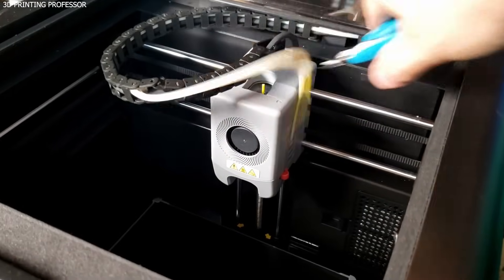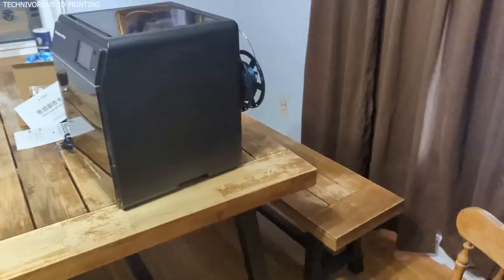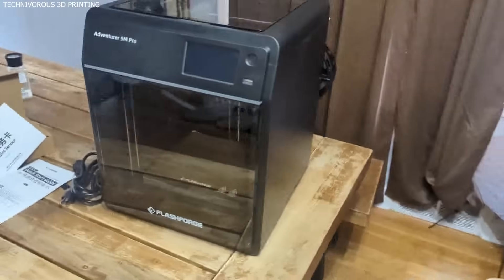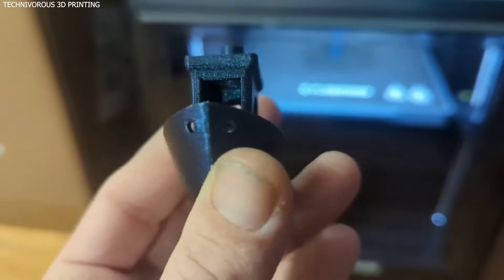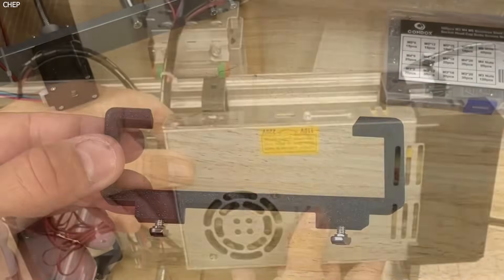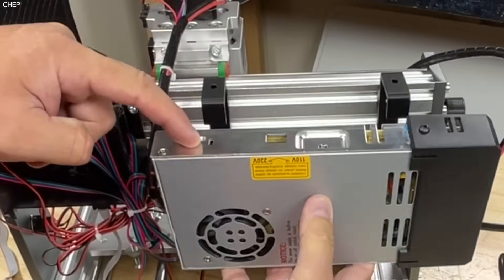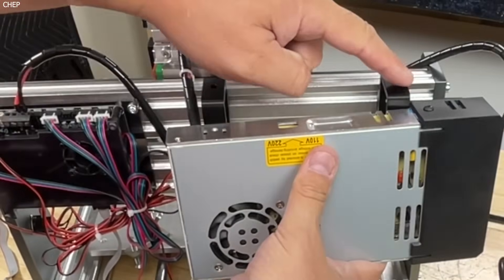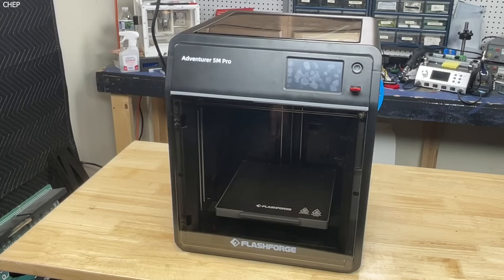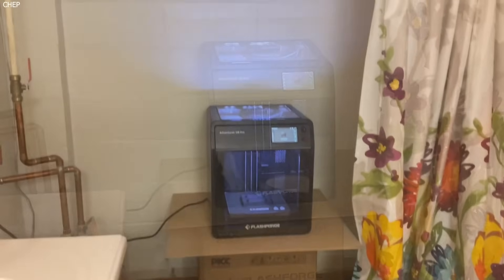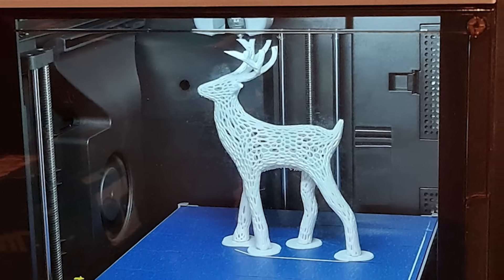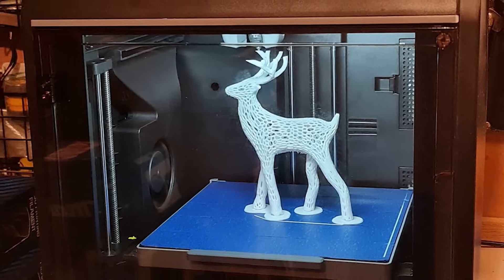The auto bed leveling system simplifies the setup process, eliminating the need for manual adjustments. Additionally, the removable flexible print bed allows for effortless print removal, reducing the chances of damage when detaching models. The printer also features a direct drive extruder, which enhances filament control and makes it easier to print with flexible materials like TPU. For those who want a hassle-free, user-friendly, and safe 3D printing experience, the FlashForge Adventurer 5M Pro is a fantastic entry-level option.